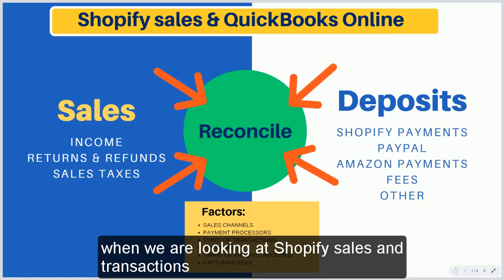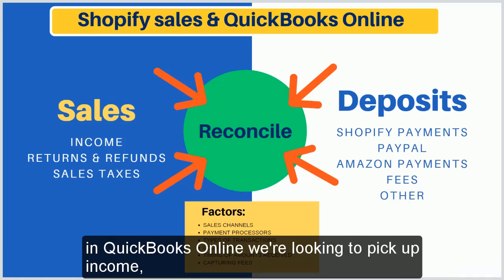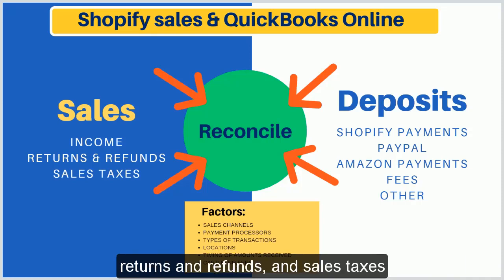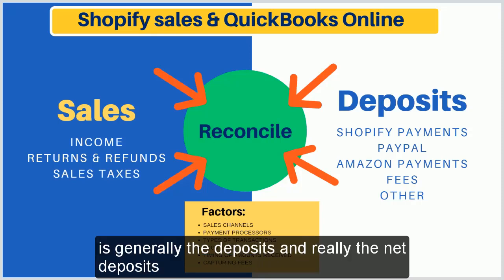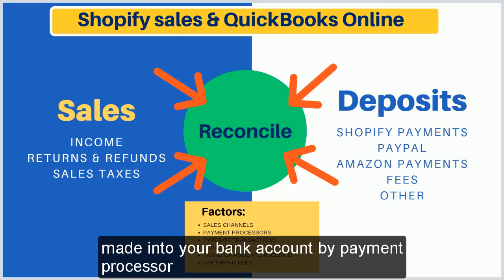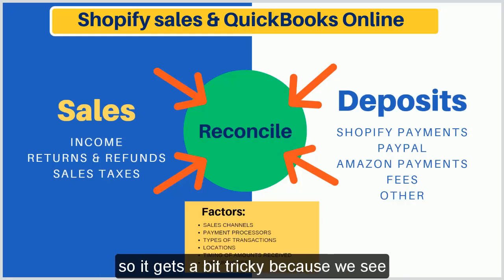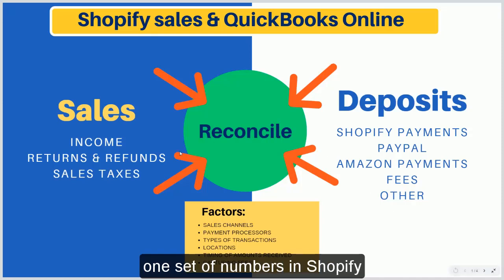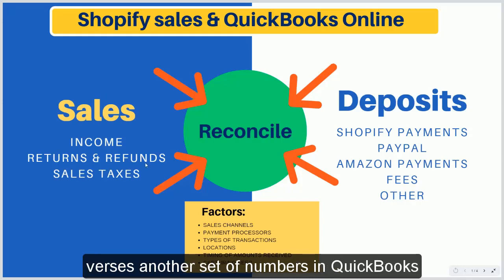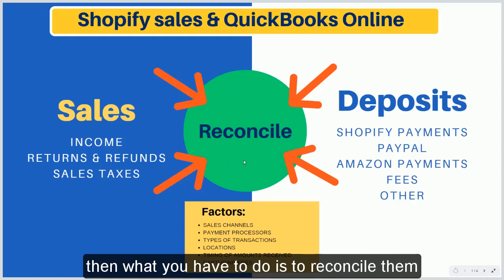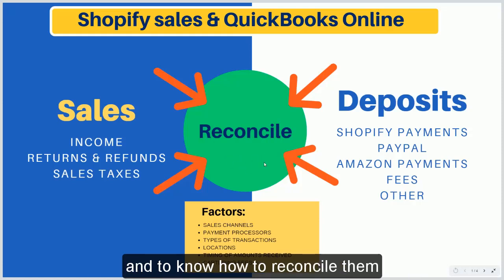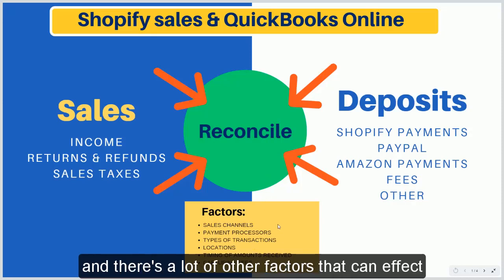When we're looking at Shopify sales and transactions in QuickBooks Online, we're looking to pick up income, returns and refunds, and sales taxes. What we see in QuickBooks Online is generally the deposits — really the net deposits made into your bank account by payment processor. It gets a bit tricky because we see one set of numbers in Shopify versus another set of numbers in QuickBooks, and those numbers don't necessarily equal. What you have to do is reconcile them, and there are a lot of other factors that can affect that reconciliation.